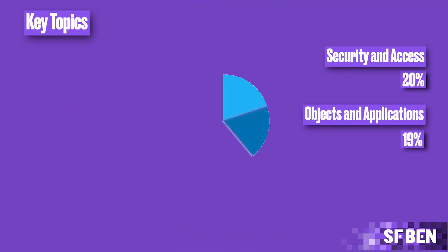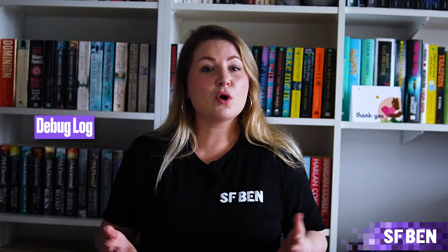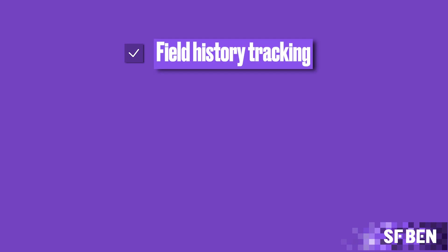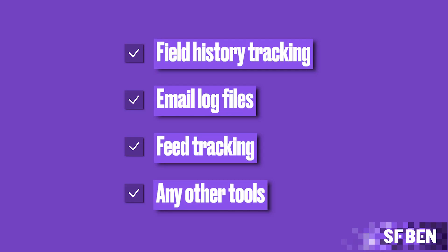Following on from that, we have Auditing and Monitoring at 10% of the exam. Within every Salesforce administrator's toolkit, there are various troubleshooting tools available, such as the debug log and the setup audit trail. For this section, you need to know what functionalities these tools provide and what tool to use based on a given scenario. Although not explicitly mentioned in the exam guide, you should also consider field history tracking, email log files, feed tracking, and other tools such as the login history.